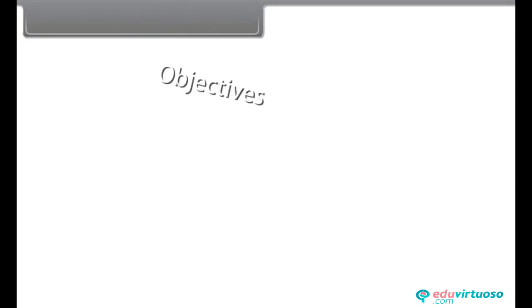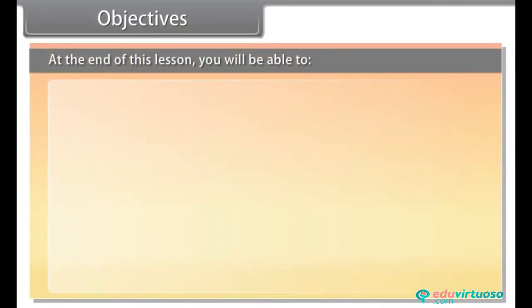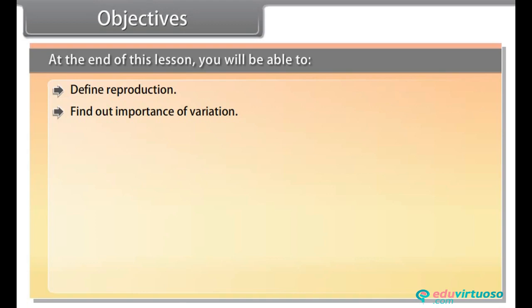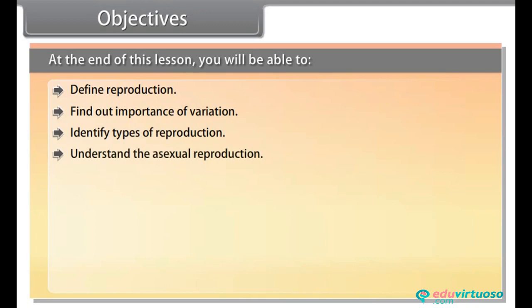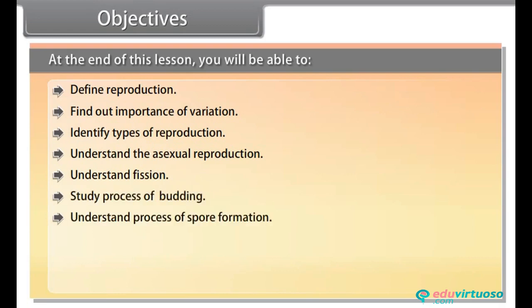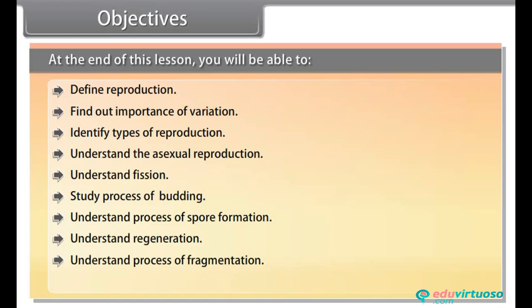Objectives: At the end of this lesson, you'll be able to define reproduction, find out the importance of variation, identify types of reproduction, understand asexual reproduction, understand fission, study the process of budding, understand spore formation, understand regeneration, understand fragmentation, find out vegetative reproduction, and exact copies of organisms.